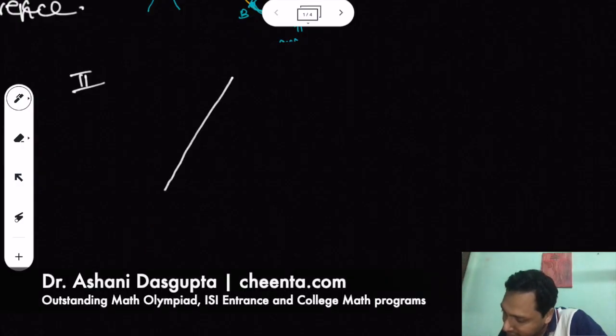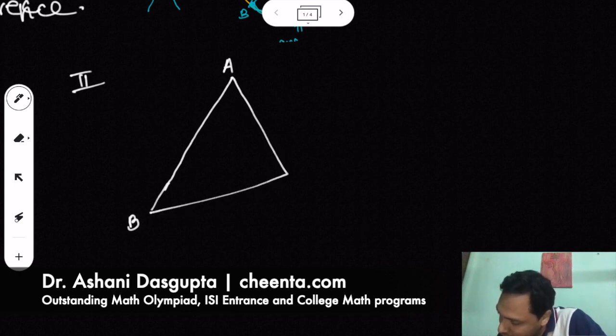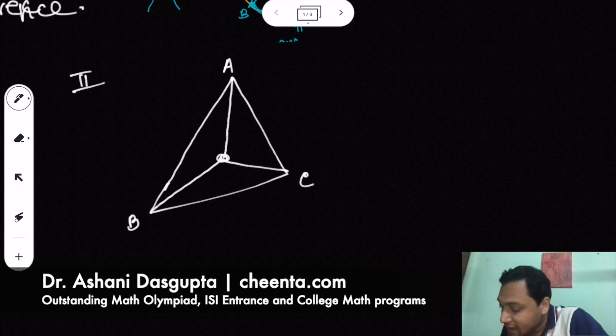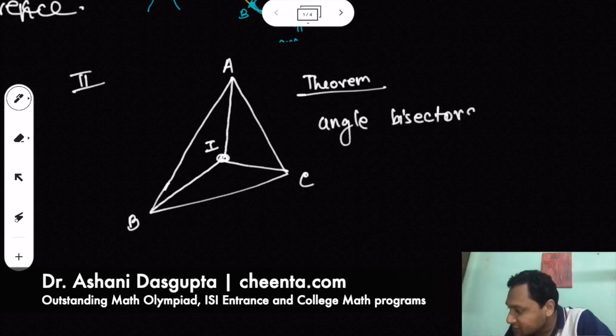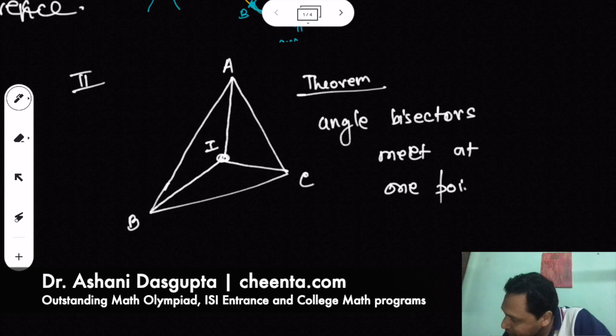Suppose we have a triangle ABC again and we have the angle bisectors of angle B, angle A and angle C, and they all meet at the incenter. So this is again a theorem that angle bisectors meet at one point inside the triangle, and that point is known as the incenter of the triangle.